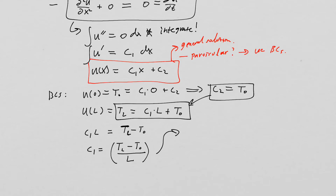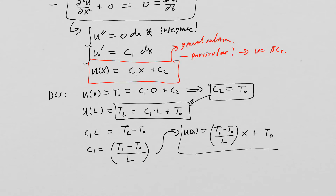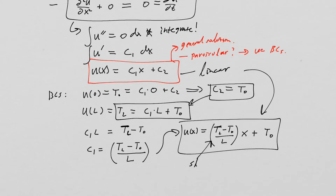Therefore c₁ equals (T_L minus T₀) over L. Putting it all together, u(x) equals (T_L minus T₀)/L times x plus T₀. This does satisfy the boundary conditions. Notice this is a linear equation where the slope is the change in temperature over the length of the rod.